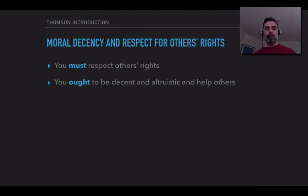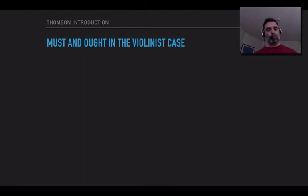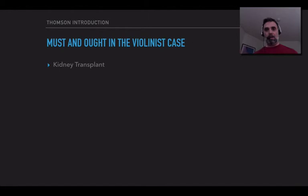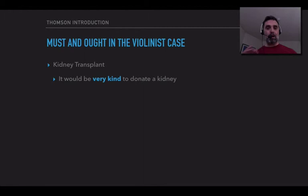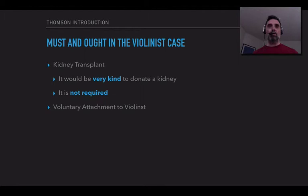So we can distinguish between moral decency and respect for others' rights. You must respect others' rights. You ought to be decent and altruistic and help others. This is not a utilitarian view — it's something like a Kantian view, although not exactly. We can apply it to the violinist case. Let's start with a kidney transplant case. You have two kidneys, but you only need one to survive. There are people who need a kidney transplant to survive. You could volunteer to donate a kidney. It would be very kind to donate a kidney, but it is not ethically required — at least, that's a very strong intuition I think we all share.